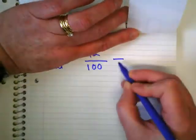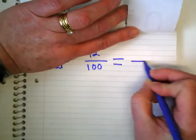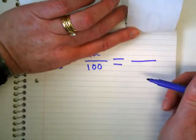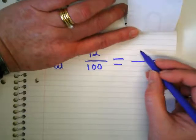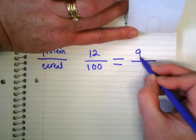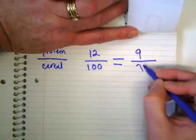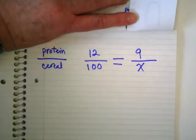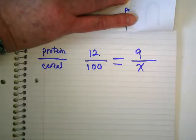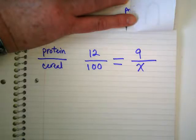Here's our unknown ratio then. We know that this has to be equal. And in our problem, it asked us about 9 grams of protein and we don't know the cereal. And instead of putting a question mark, we're going to put a variable. I usually use x.